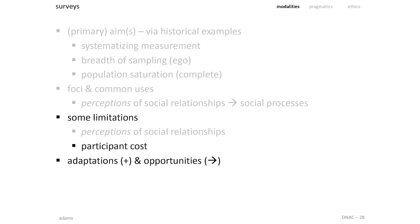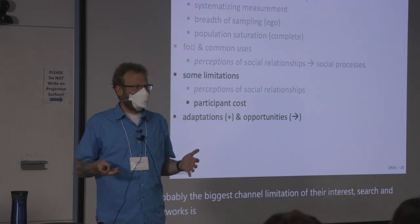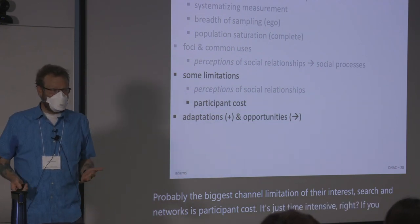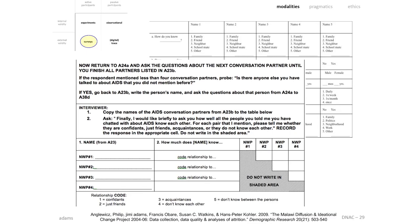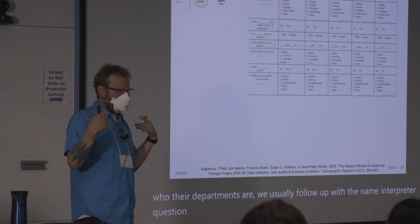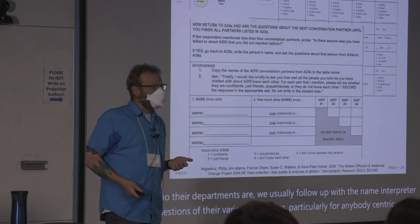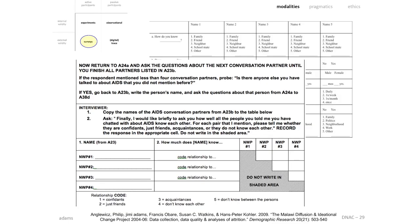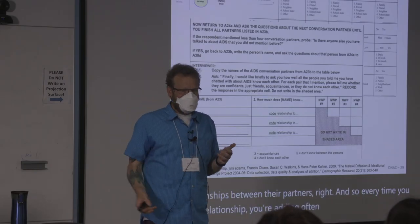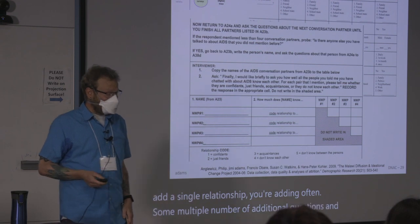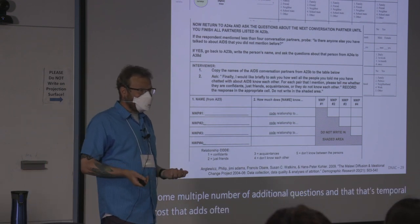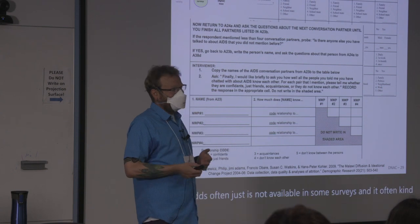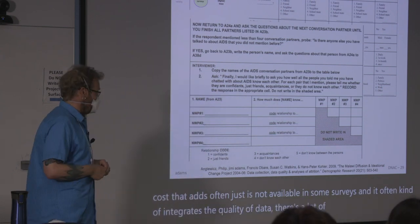Probably the biggest limitation of survey research in networks is participant cost — it's just time intensive. As soon as we ask people who their partners are, we usually follow up with name interpreter questions about various attributes, particularly in egocentric designs. And even then, we can ask them to report on the relationships between their partners. Every time you add a single relationship, you're adding often some multiple number of additional questions, and the temporal cost often isn't available in some surveys — it degrades data quality and introduces a lot of problems.